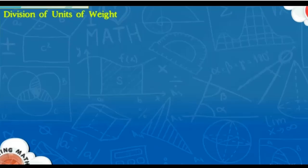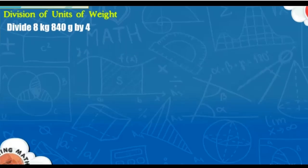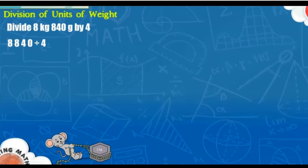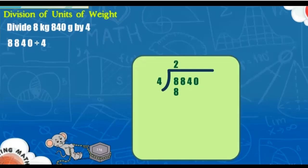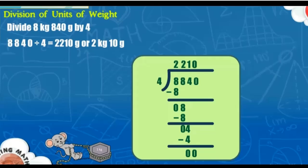Division of units of weight: We should be careful to divide the two units separately. Divide 8 kilograms 840 grams by 4. Arrange the numbers in proper columns and divide 8,840 by 4 step by step — dividing thousands, hundreds, tens, and ones in sequence. So, 8 kilograms 840 grams divided by 4 is equal to 2210 grams, or 2 kilograms and 210 grams.